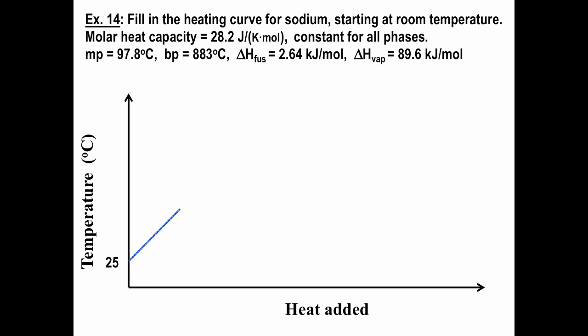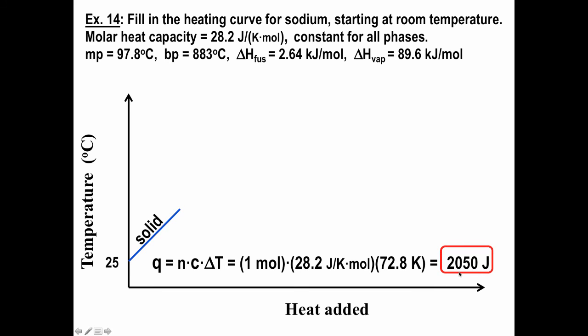Notice that we start at room temperature, 25 degrees Celsius. Since sodium's melting point is almost 100 degrees Celsius, it starts as a solid. If we add heat, the temperature will rise until we hit 97.8 degrees Celsius. The substance is a solid during this whole time. So the amount of heat added will be Q equals, and now here instead of MC delta T, we'll use NC delta T. The only reason we're doing this is because the specific heat was given in joules per kelvin mole. Let's assume we have one mole of sodium times 28.2 joules per kelvin mole times a temperature change of 72.8 degrees Celsius. That works out to be a little over 2,000 joules.